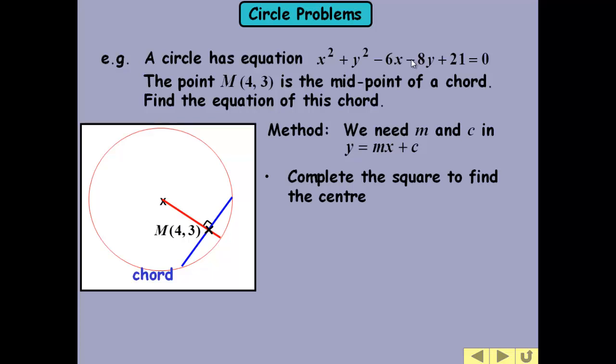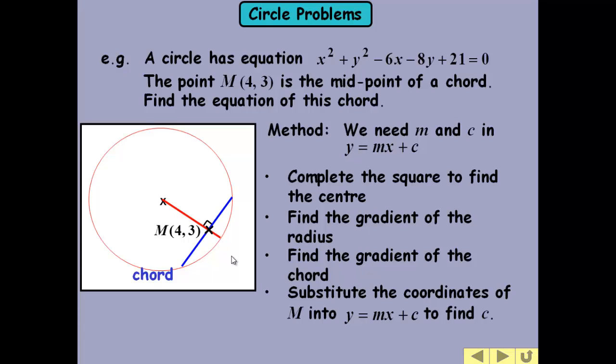So we need to complete the square to get the information from the circle. So we complete the square to find the centre. That will then enable us to find the gradient of the radius. Because the chord is perpendicular, we can use the negative reciprocal then for the gradient of the chord. And then we use our normal method like we use with the tangent. We substitute the values of that gradient in and the coordinates of the midpoint, 4, 3, to find our equation.